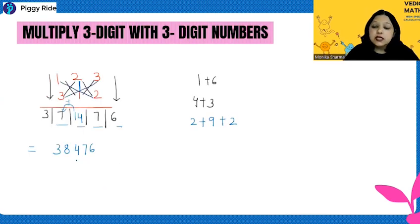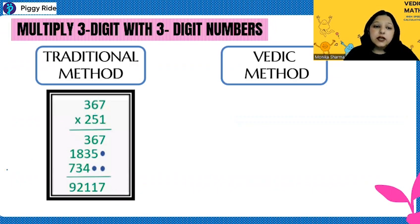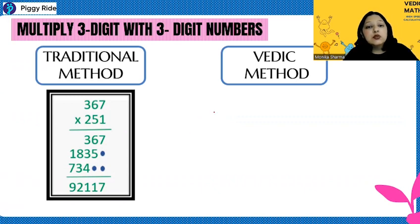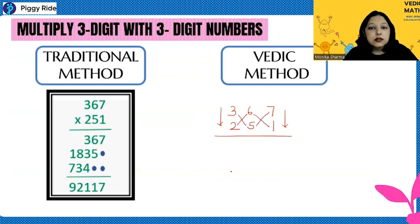Now let's do the same question with our Vedic concept. In this you can see 367. We have to multiply it with 251. So write 367, 251. Now arrows according to the previous sum, previous concept. Middle arrows, middle crosses.